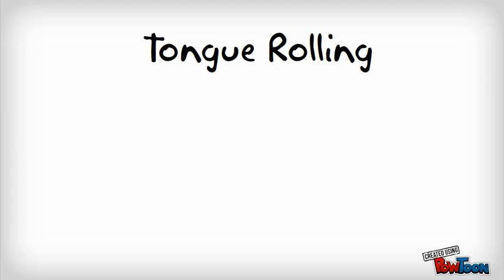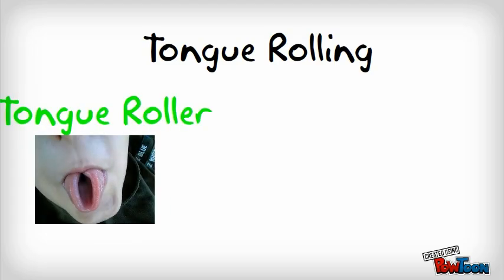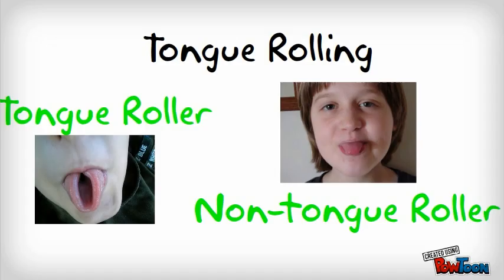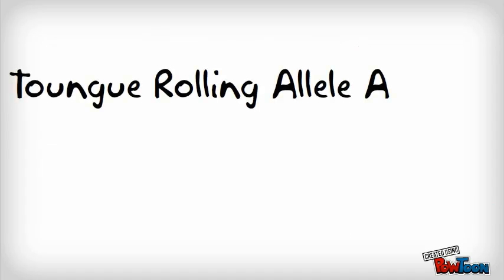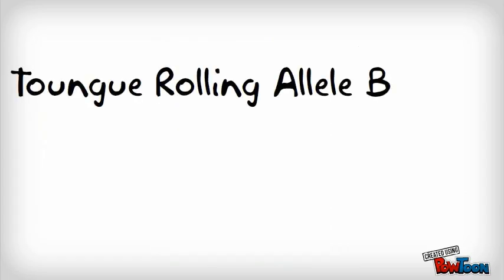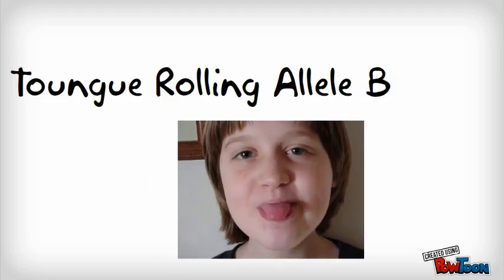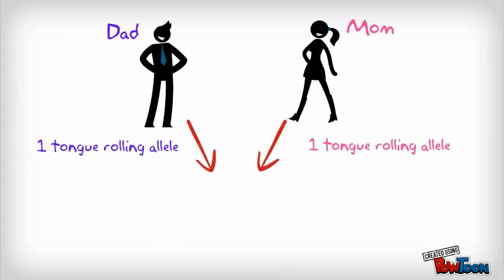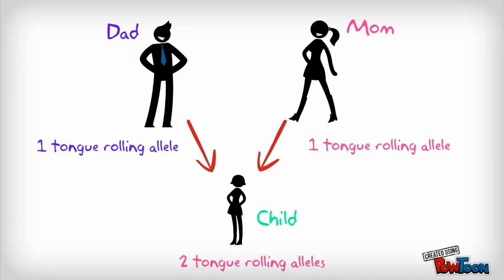For example, all humans have genes that determine if they are able to roll their tongue or not. There are two forms of the tongue-rolling gene. The first form, tongue-rolling allele A, allows a person to roll their tongue. The second form, tongue-rolling allele B, does not allow a person to roll their tongue. You inherited one tongue-rolling allele from each of your parents, and together these alleles determine if you can roll your tongue or not.